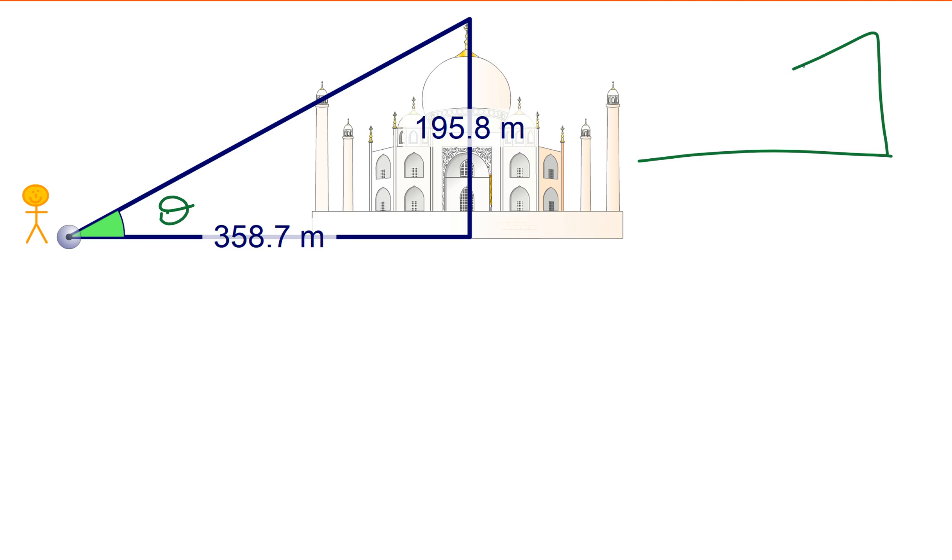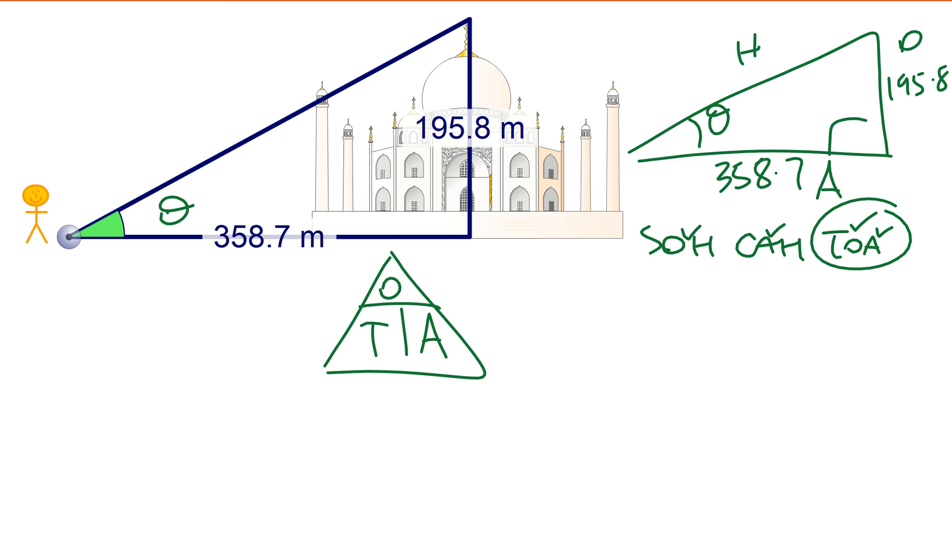There is my triangle, 195.8, 358.7. Here's my angle of elevation, H, O and A. I've got my O's, I've got my A's, I'm using TOA. Same thing as what I just did.